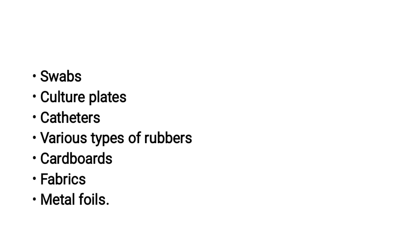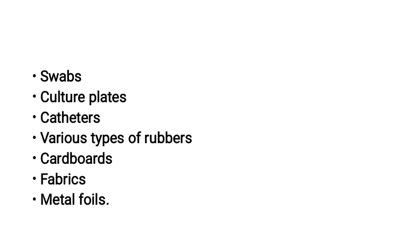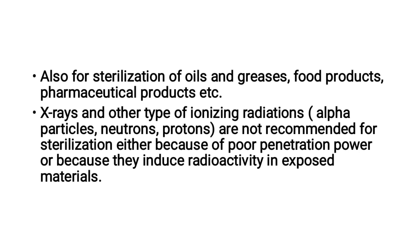Ionizing radiation is used for sterilization of items such as plastic syringes, swabs, culture plates, catheters, various types of rubber, cardboard, fabrics, and metal foils. It is also used for sterilization of oils, greases, food products, and pharmaceutical products. Alpha particles, neutrons, and protons are not recommended for sterilization either because of poor penetration power or because they induce radioactivity in exposed materials.